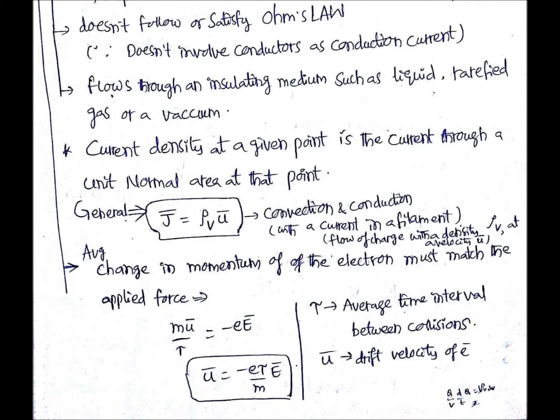One important point regarding conduction current density: the average change in momentum of the electron must match the applied force, given by mu/τ = −eE, where −e is the charge of the electron and τ is the average time interval between collisions. From this, u = −eτ/m · E. Substituting this u into ρv·u gives the conduction current density.